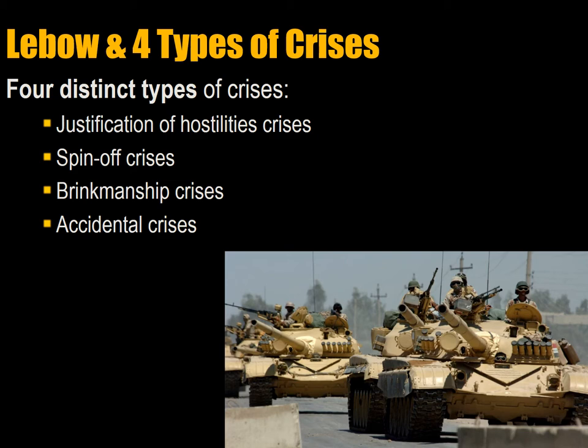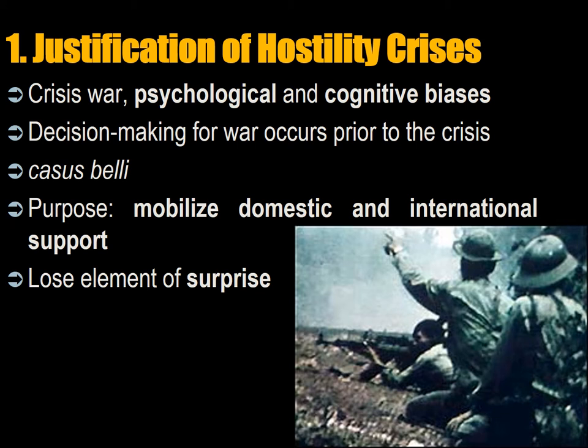The first type of crisis is the justification of hostility crisis. Normally if a crisis leads to war, it is because of psychological and cognitive biases during the crisis. But in a justification of hostility crisis, decision making for war occurs prior to the crisis. So it's not really a crisis at all. The crisis provides the casus belli for the aggressor.